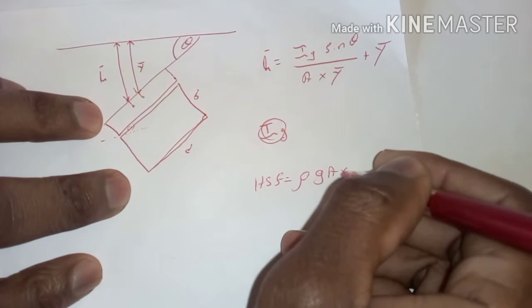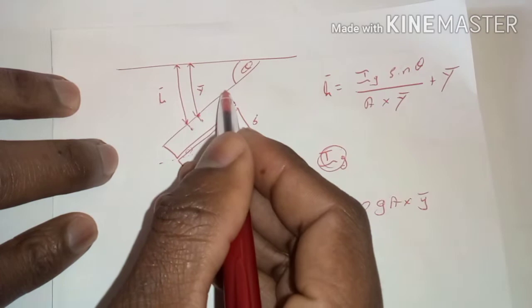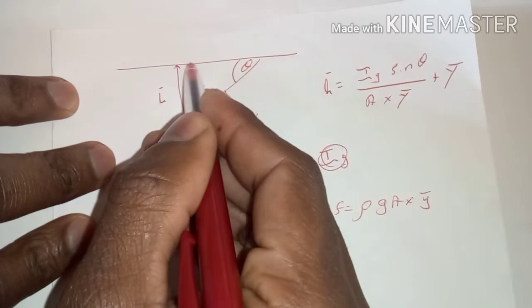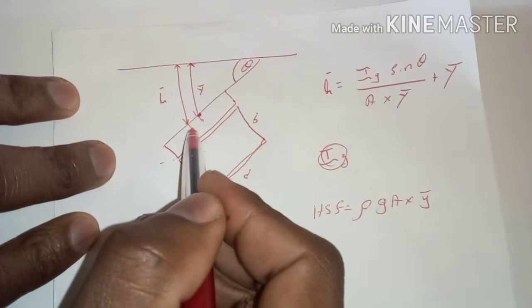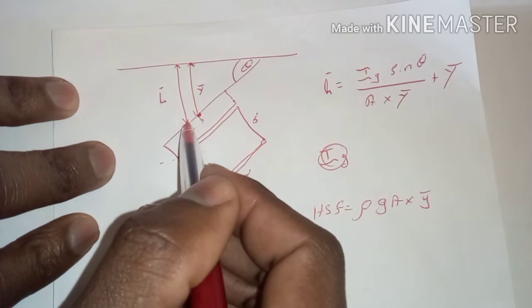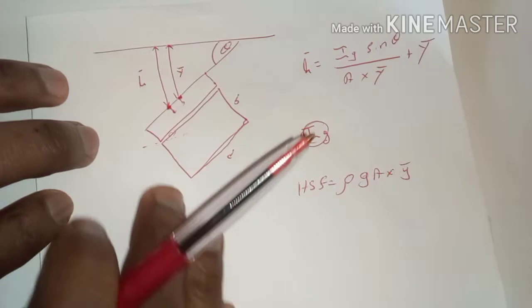First of all, our hydrostatic force is not changing — we are still going to use the formula ρgA times y-bar. The only things that are changing today are our centroid: y-bar will no longer be the length of the object we are dealing with, but rather the distance from the centroid to the surface of the water. And the center of pressure will be slightly below the centroid, but we're no longer considering the length of the object — rather, the distance from the center of pressure to the surface of the water.